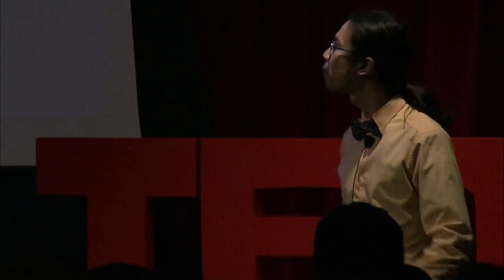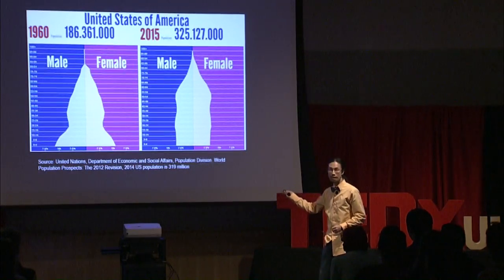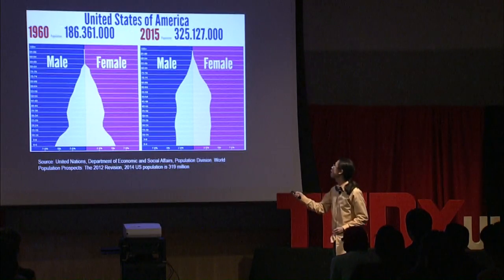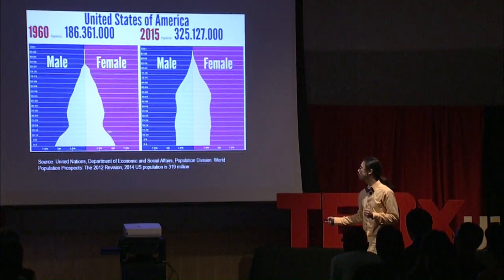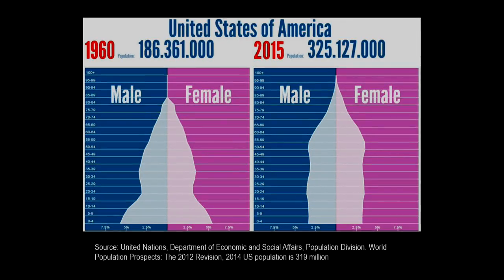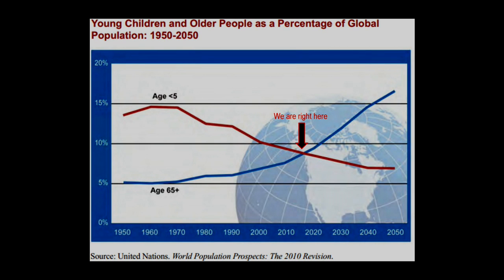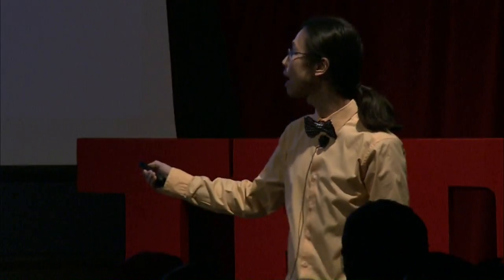This is called a population pyramid. What we see here is a perfect example of 1 plus 1 greater than 2. During a 55-year period, the US population almost doubled. The baby boom of the 1960s has transformed into this cluster of aging population. This phenomenon is even more severe on a global scale — within a hundred years, the percentage of elderly versus younger people will switch completely, and we are right at the tipping point.